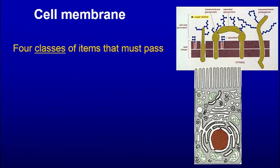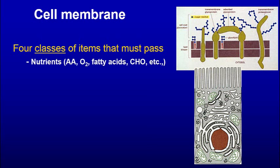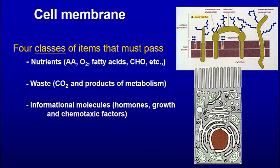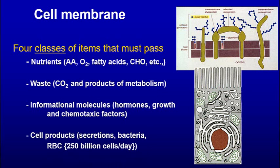There are four classes of things that must pass. First, nutrients must come in: amino acids, oxygen, fatty acids, carbohydrates, etc. If nutrients come in, waste must come out — CO2 and products of metabolism. Also, inflammation molecules must pass through or signal through the cell membrane. Hormones, growth factors, or chemotactic factors must get through to alert the cell. And cell products like secretions must go out, while bacteria must go in for phagocytic cells.